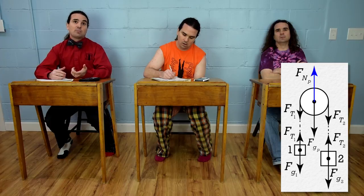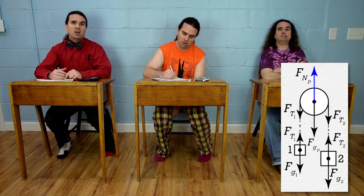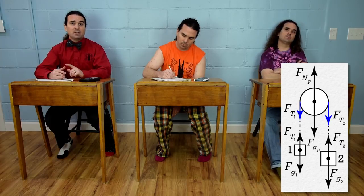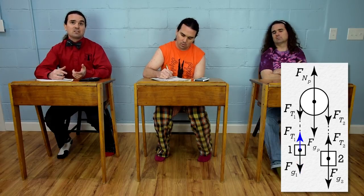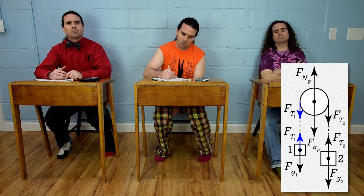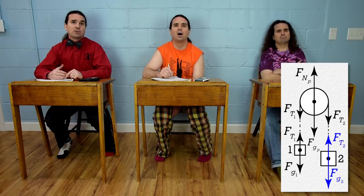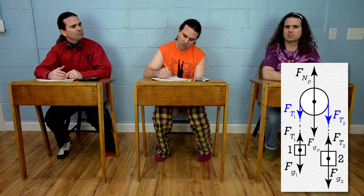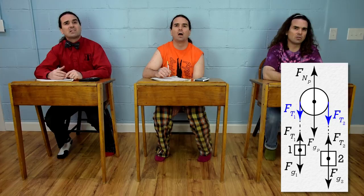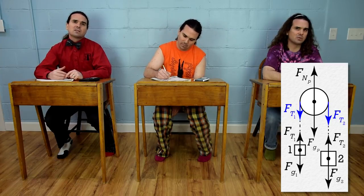Billy, please begin solving the problem. Let's draw free body diagrams. The pulley has a force of gravity acting down at its center of mass and a normal force up at the same location. The pulley also has two forces of tension acting down on it, one on each side. Force of tension 1 points towards mass 1 and force of tension 2 points towards mass 2.